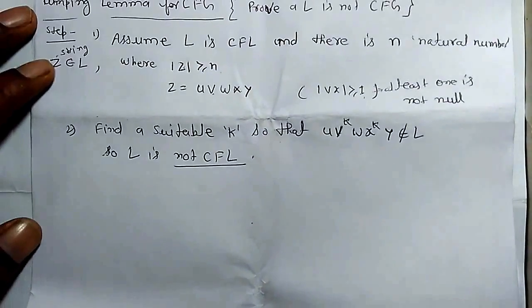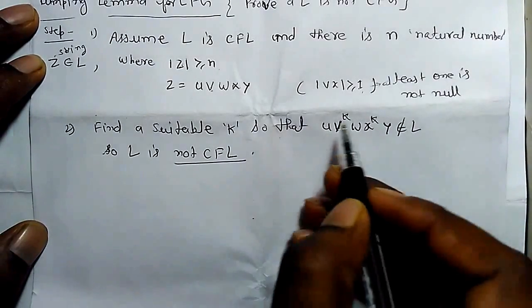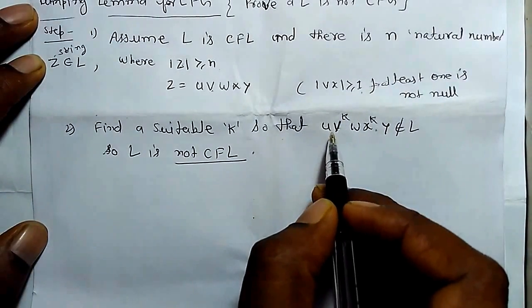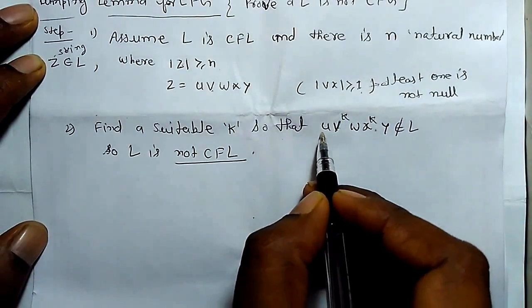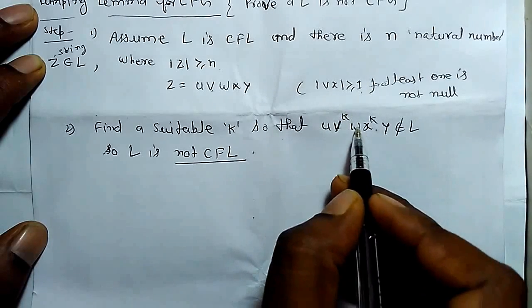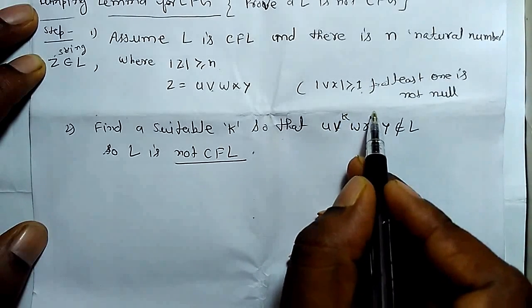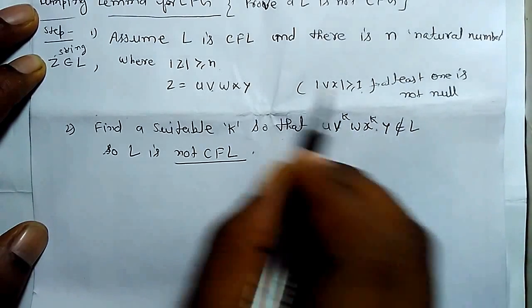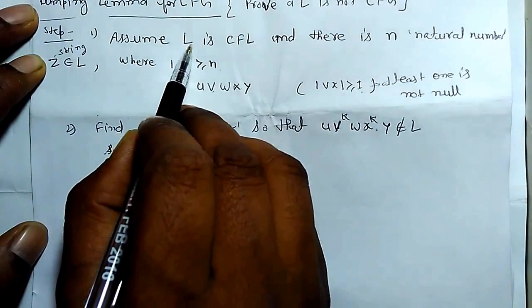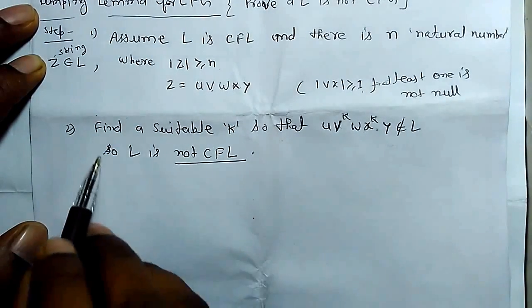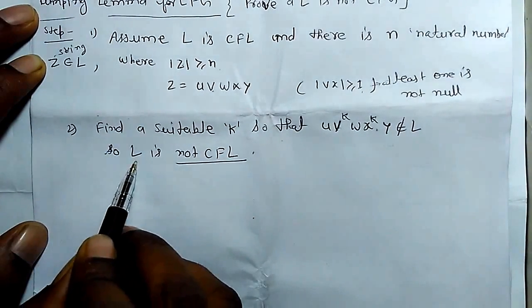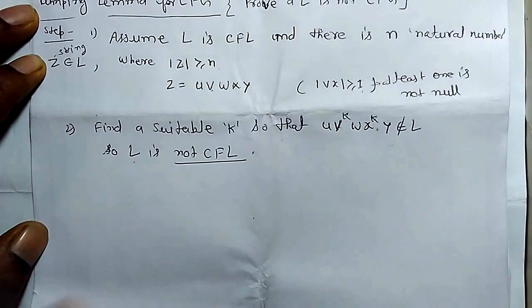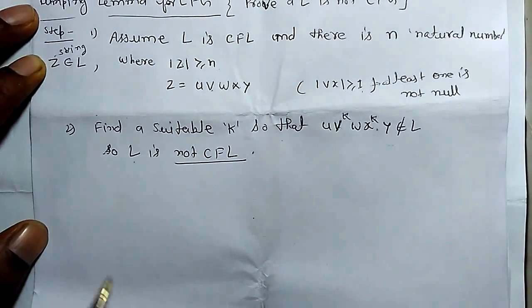Next, we apply pumping by varying the values of v and x, and we find that u v^k w x^k y does not belong to the context-free language. In that situation, we prove the language is not context-free. These are the two key steps we apply.